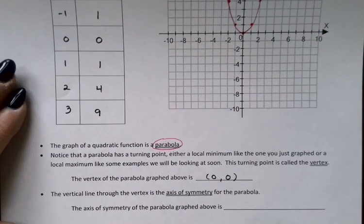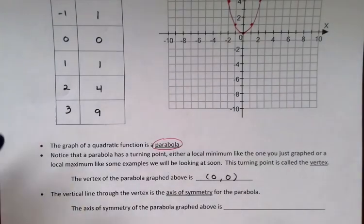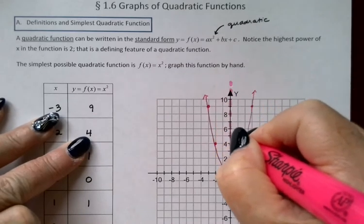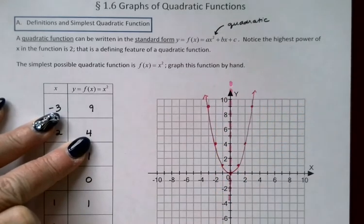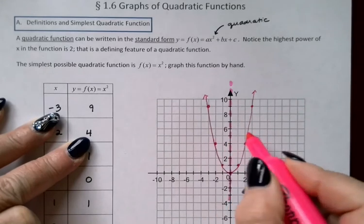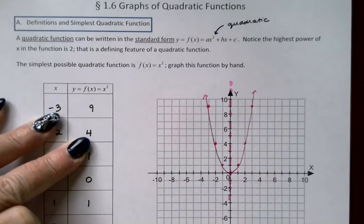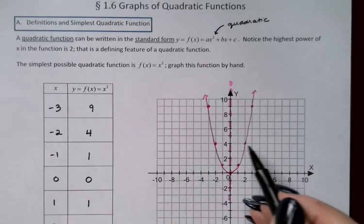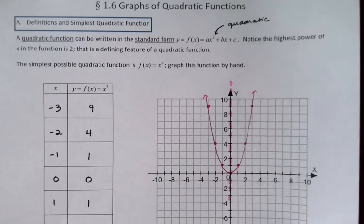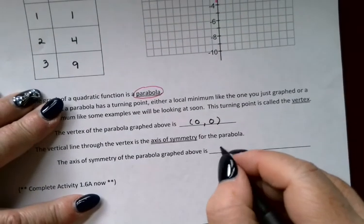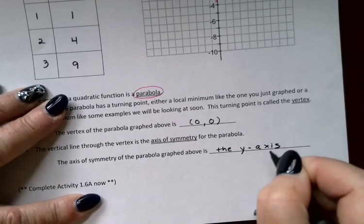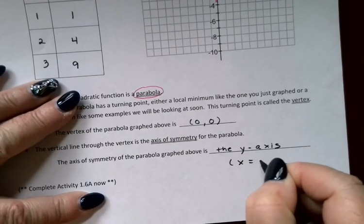The parabola also has symmetry. If you imagine, in this case, kind of like a mirror sitting here on the y-axis, the two sides of the parabola are really just a reflection of one another across the y-axis. So we say the axis of symmetry is that y-axis. It's the mirror line for the parabola. So the axis of symmetry here is the y-axis, which would have equation x equals 0.